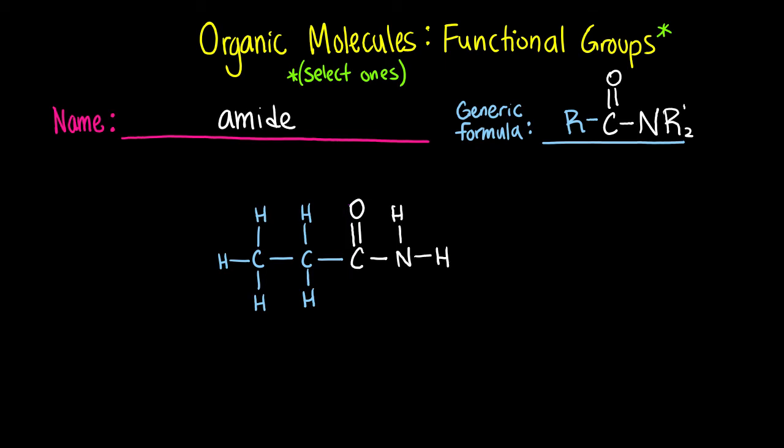The last functional group that we're going to cover is called an amide. An amide is characterized by a carbon double bonded to an oxygen with nitrogen attached to it also. Just like with an amine, an amide has some substituents on that nitrogen that are either carbon or hydrogen.